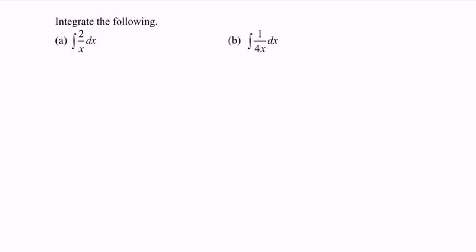So here we have the situation: integration of a function in the form of 1 over x and 1 over ax plus b to the power of 1. Referring to example a, we will have 2 multiplied with ln|x| plus c.